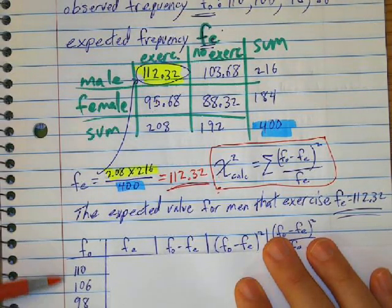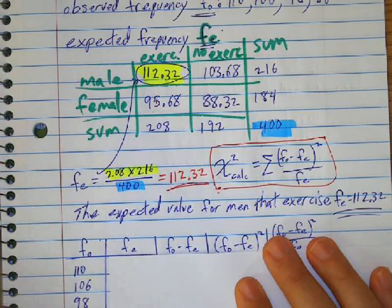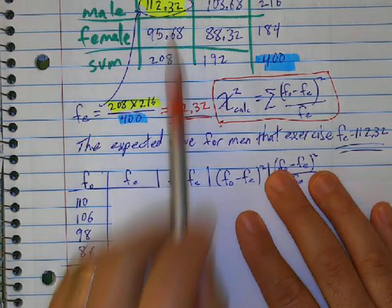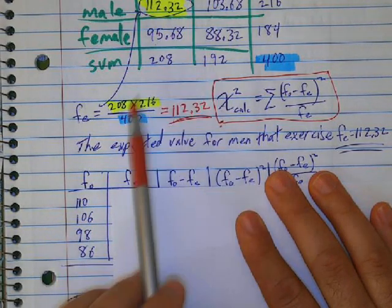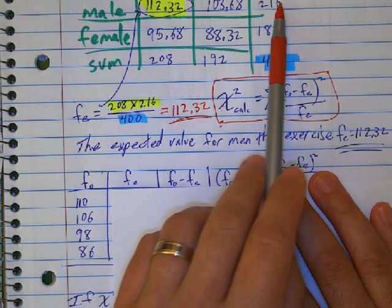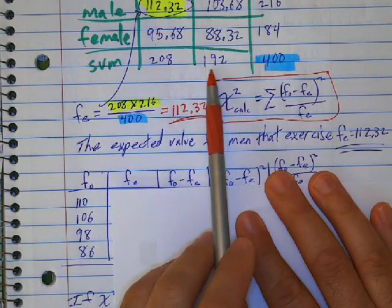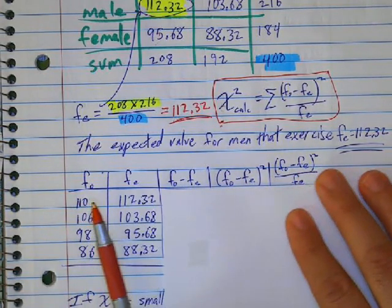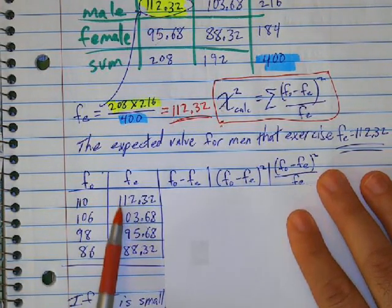which is these guys right here, the 110, 106, 98, and 86. Okay. Then I take my expected values, which I've just calculated. So like this one here is 216 times 192 divided by 400 gives me this. Okay. So I write all the expected frequencies here.